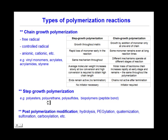Types of polymerization reactions include chain growth polymerization — free radical, controlled radical, anionic, and cationic. The table on the right shows the main differences between step growth and chain growth reactions. Step growth polymerization is an important type of reaction used especially in the case of polyesters, polyurethane, but also biopolymers.